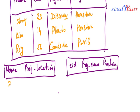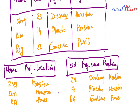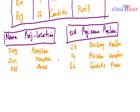In the first table I have name and project location: Jimmy–Houston, Kim–Houston, Roy–Paris. In the second table I store employee ID, project name, and project location: 23–Discovery–Houston, 14–Placebo–Houston, and 56–Candide–Paris. So far so good — no problem until here.